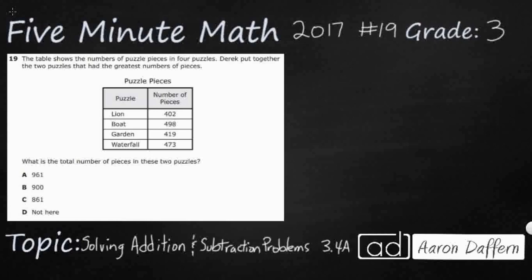So we have a table here and it shows the numbers of puzzle pieces in four puzzles, and the biggest clue is Derek put together the two puzzles that had the greatest number. So we need to order these from greatest to least, and they are already lined up here, and they all have a 4 in the hundreds place.